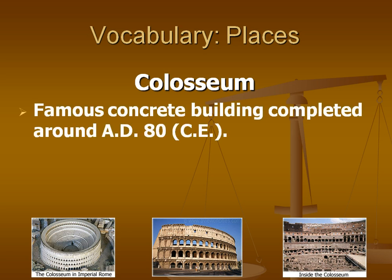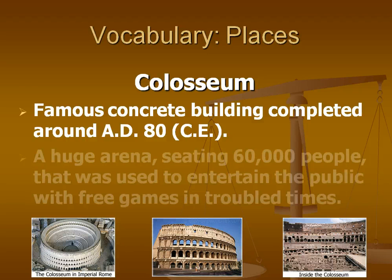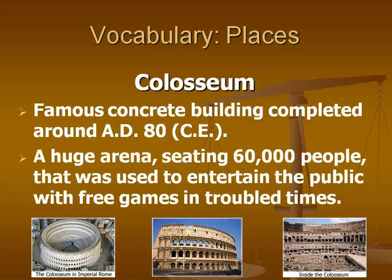The Colosseum is a famous concrete building that was completed around AD 80. It was a huge arena, and it could seat between 50,000 to 60,000 people, and it was used to entertain the public with free games during troubled times in the Roman Empire.